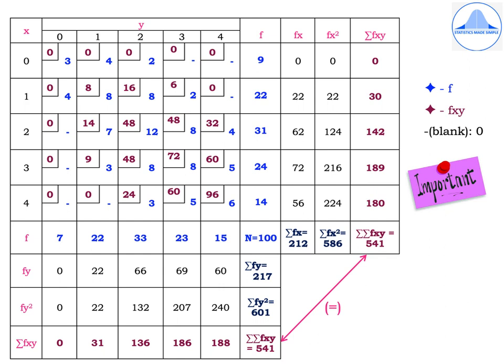Similarly, find the last row summation fxy by adding values in the small cells for each y value. When y equals 0, the sum is 0. When y equals 1, add 0, 8, 14, 9, 0 to get 31. When y equals 2, add 0, 16, 48, 48, 24 to get 136. When y equals 3, add 0, 6, 48, 72, 60 to get 186. When y equals 4, add 0, 0, 32, 60, 96 to get 188. Double summation fxy equals 541 — it is very important that the row and column totals match.